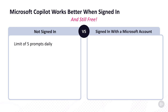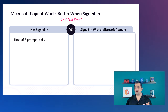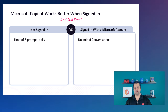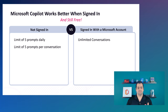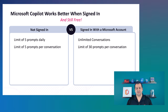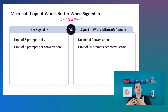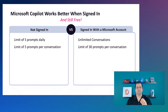When you use Copilot and you are not signed in, you are limited to five prompts daily. A prompt is an interaction with your AI tool — in this case, Microsoft Copilot. If you use Copilot signed in with a Microsoft account, you have unlimited conversations daily. Without being signed in, you have a limit of five prompts per conversation; with a Microsoft account, you can go up to 30 prompts per conversation, so Copilot will keep that history and be able to further improve the result you're looking for.